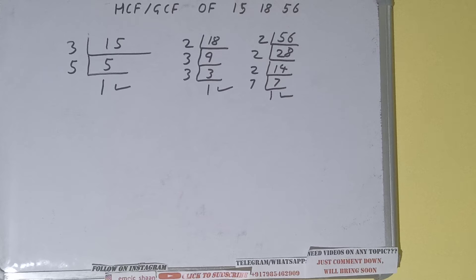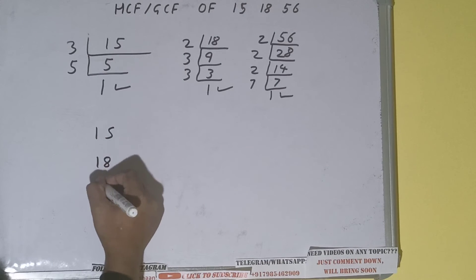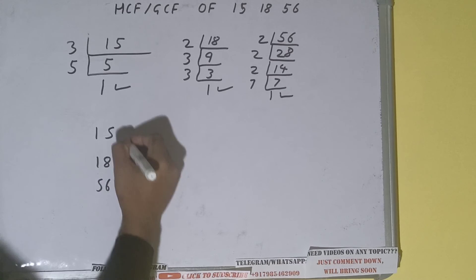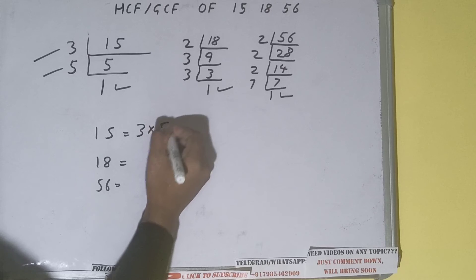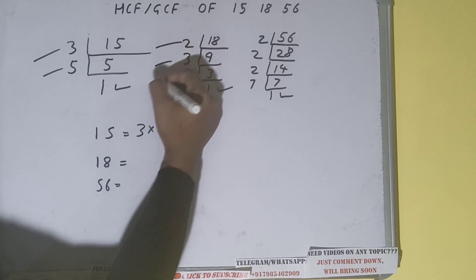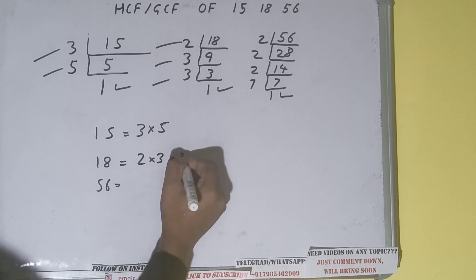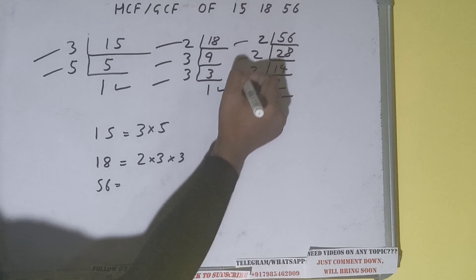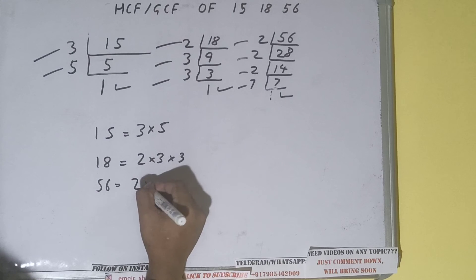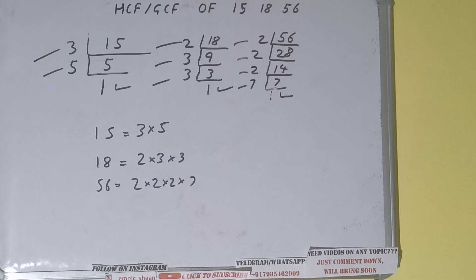We are done with the prime factorization of each number. Now we need to write down each number with their respective prime factors. For 15, the prime factors are 3 × 5. For 18, the prime factors are 2 × 3 × 3. For 56, the prime factors are 2 × 2 × 2 × 7.